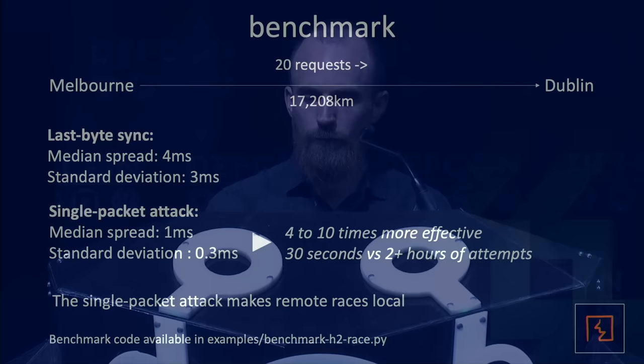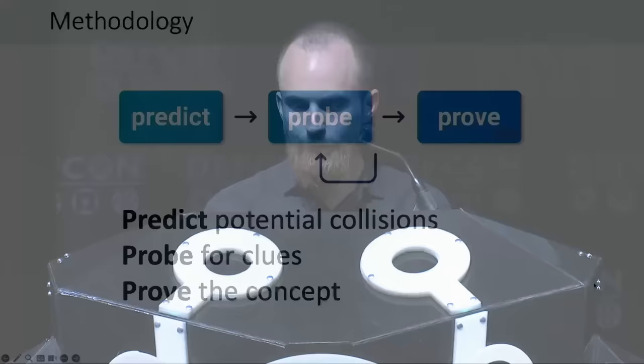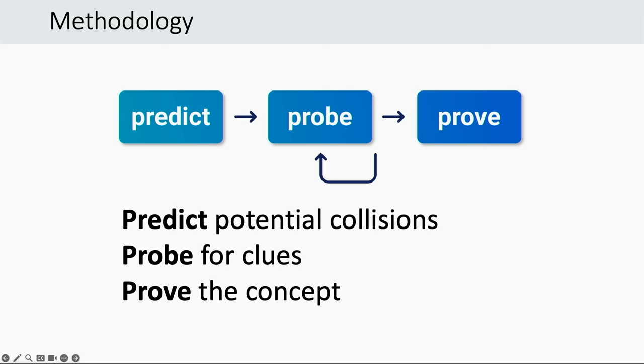Now that we've solved network jitter, it's time to go hunting for some bugs. Limit overrun vulnerabilities are easy to find — you look for a limit and you try and overrun it. But going beyond that, things get a bit trickier. After months of manual testing and discovering every possible pitfall, I've developed the following three-step methodology to find these bugs reasonably efficiently: first, you predict where you might have potential collisions; then you probe those places to identify clues that there's a substate there; and finally, you prove the concept by figuring out what happened and using that knowledge to build an exploit.